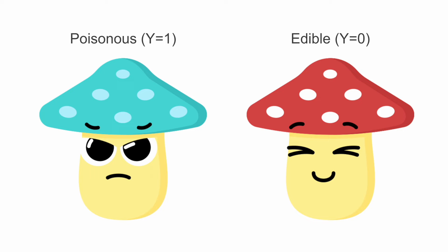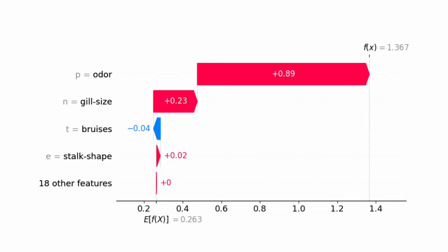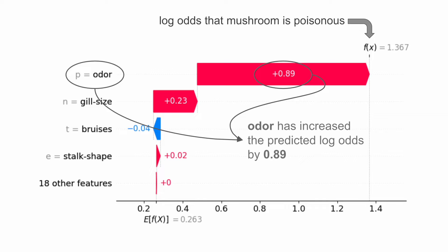Hopefully this interpretation is clear when we have a continuous target variable, but what about classification problems? We build a model to predict if a mushroom is poisonous or edible. We can use SHAP to understand how each feature has changed the predicted probability that a mushroom is poisonous. More specifically, we interpret the SHAP values in terms of log odds. For example, this mushroom's smell or odor has increased the predicted log odds by 0.89 — in other words, its smell means it is more likely that we predict this mushroom to be poisonous.